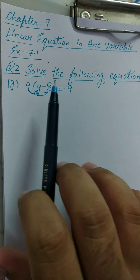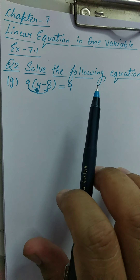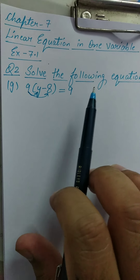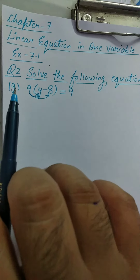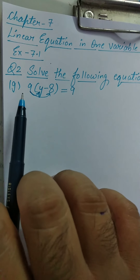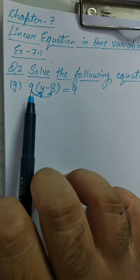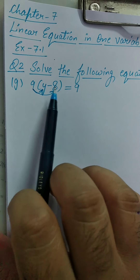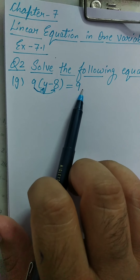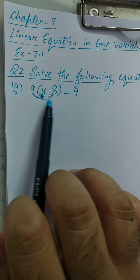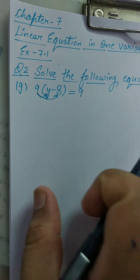Parts A, B, C, D, E, F — I have already discussed with you in the last class. Today I will start from part G. In part G, you have 9 in bracket Y minus 8 equal to 9. First of all, you have to solve this equation, then verify your result.